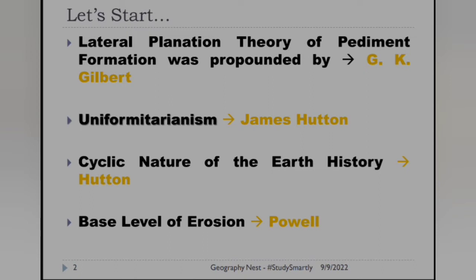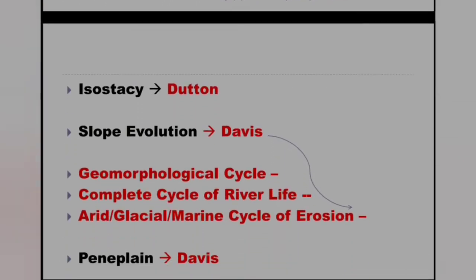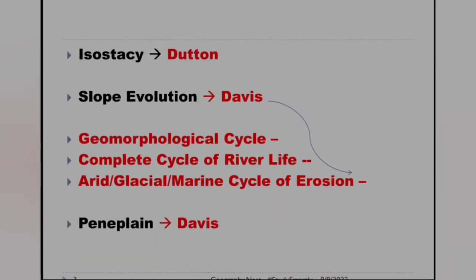Uniformitarianism was given by James Hutton. Cyclic nature of the earth history — Hutton. Base level of erosion — Powell. Next is isostasy, and this was given by Dutton.